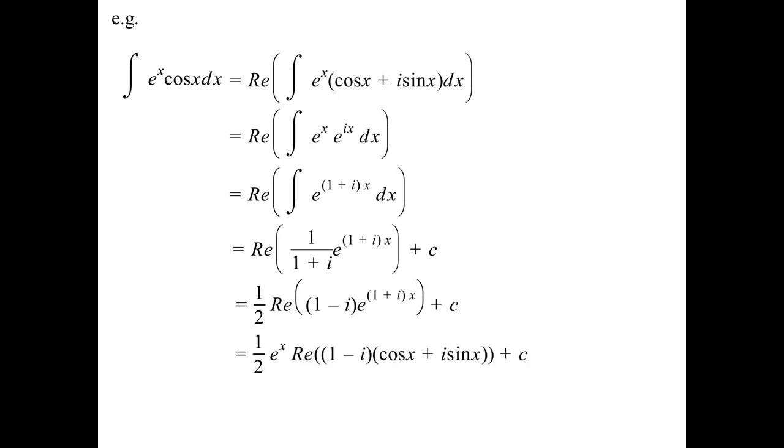Well, what is e to the 1 plus i x? It's 1 minus i times cos of x plus i sine of x. Because e to the x is a real number, I can pull that out. So really, I'm just saying 1 minus i times e to the ix, which is cos x plus i sine x. Now, let's expand that expression out. And we just want the real part of the expansion. And there's the answer. Certainly not the way they would be expecting you to do it. Certainly a valid way of doing it.